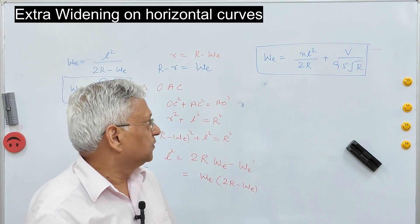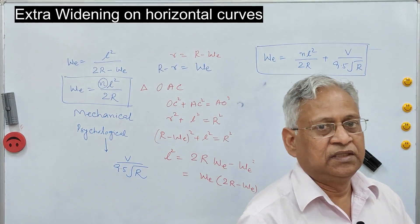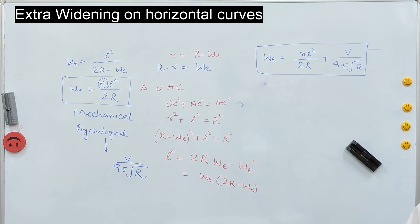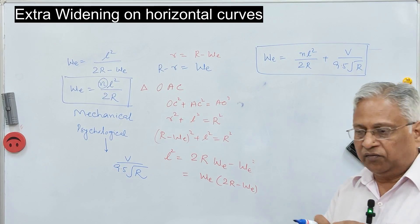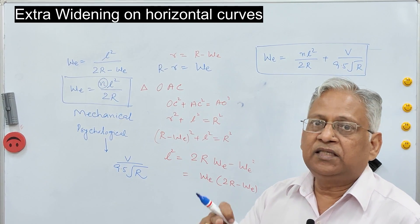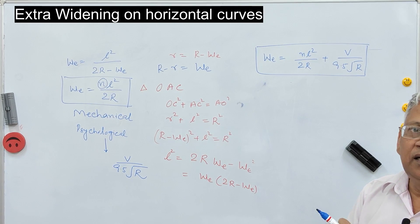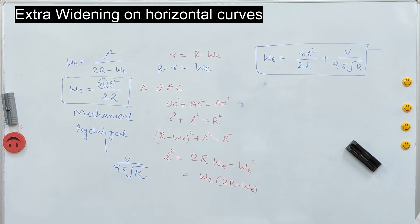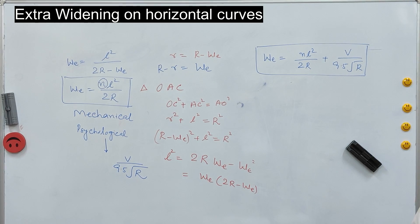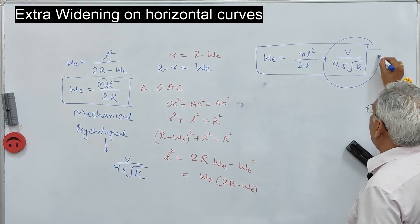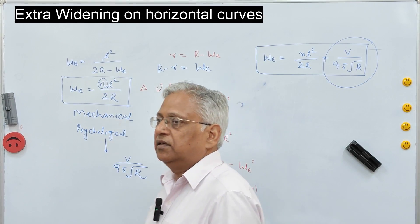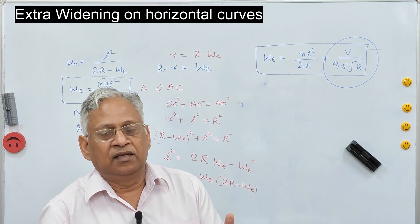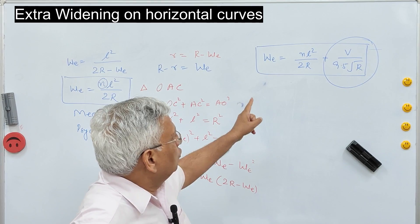One thing to remember: on a single-lane road, the carriageway width provided is only 3.75 meters. Therefore, even on a normal tangent road, the crossing of vehicles is done by making use of shoulders. The same thing happens on a horizontal curve as well. Therefore, on a single-lane road, psychological widening is not provided — only mechanical widening is provided. The psychological gap is maintained by vehicles using the shoulders. But in the case of two-lane and multi-lane roads, total widening is NL² / 2R plus V / (9.5√R).